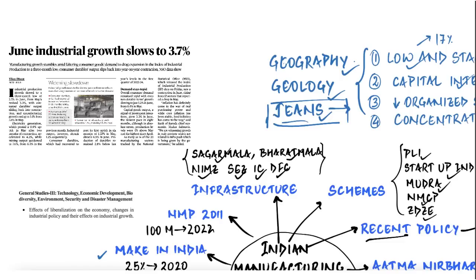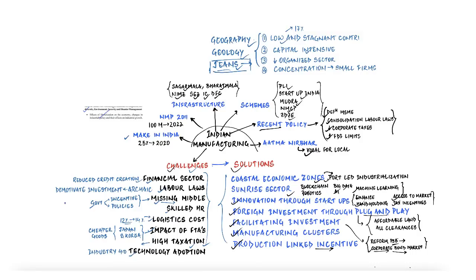If you look into GS Paper 3 syllabus, the effect of liberalization on economy followed by changes in industrial policy and their effects on industrial growth is part of your syllabus. When we talk about Indian manufacturing, there are three main dimensions you should be concerned with: what is the current level of manufacturing, what is the government doing to help the manufacturing sector, and what are the challenges and solutions. We will discuss all of this in the next 18 minutes.